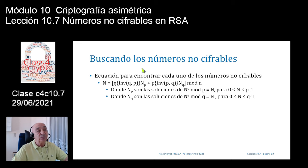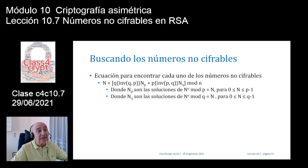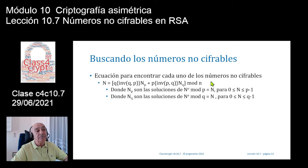Para encontrar los números no cifrables, la ecuación indica que el conjunto de números N no cifrables viene dado por: Q × (inverso de Q en P) × NP + P × (inverso de P en Q) × NQ, todo reducido módulo N. Los valores NP y NQ son el núcleo del problema.